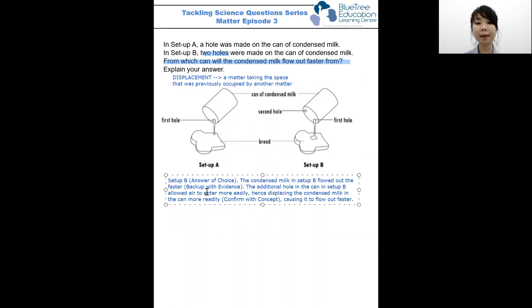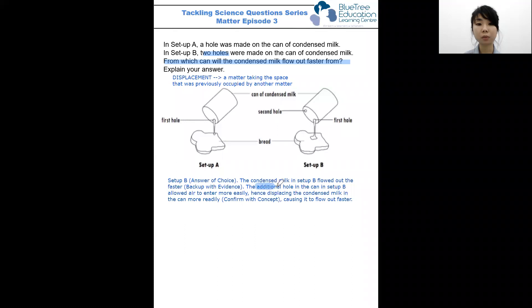And the reason or the concept behind it is that the additional hole allows air to enter more easily. And this air displaces the condensed milk more readily, allowing it to flow out faster.